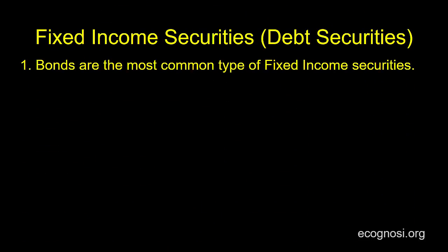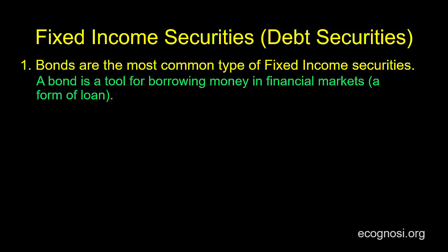Our first point is that bonds are the most common type of fixed income securities. What is a bond? Simply put, it is a tool for borrowing money in financial markets — it is a form of loan.